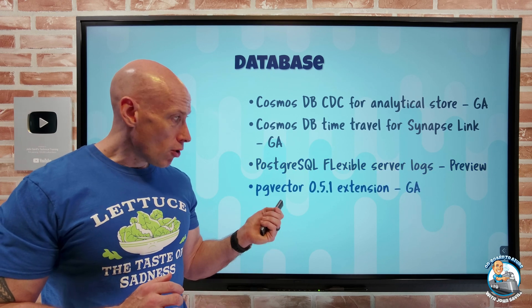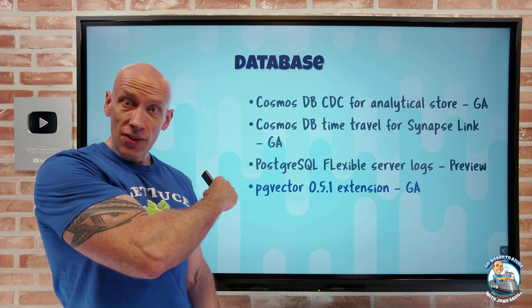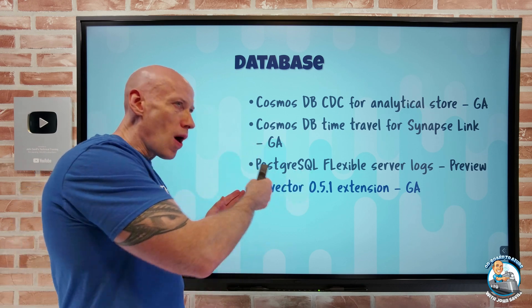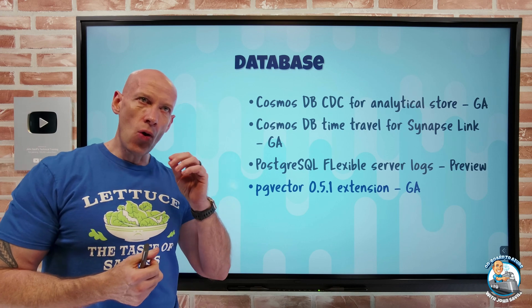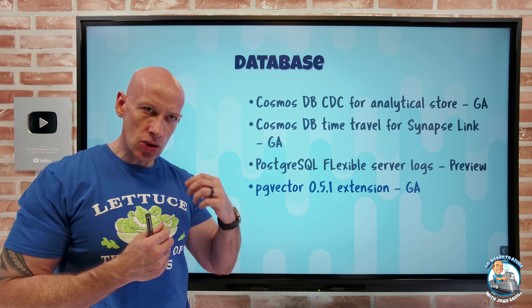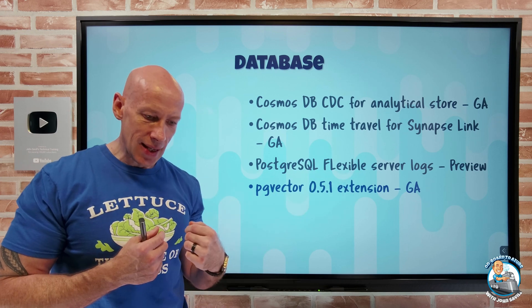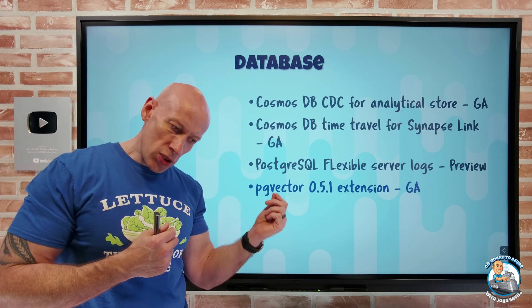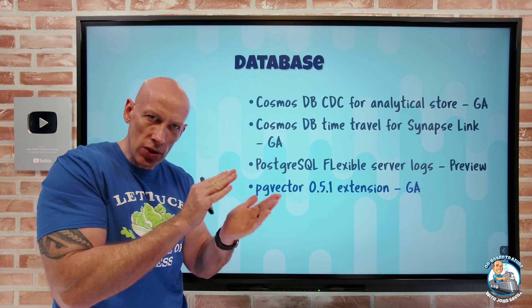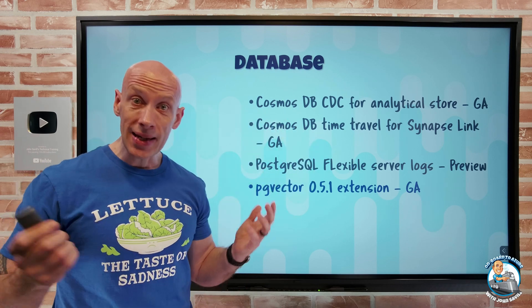The PG Vector 0.5.1 extension is now available. As discussed in this week's second video on embeddings and vectors, this enables PostgreSQL to easily integrate with Azure AI services — sending data through an embedding model to get a vector back that it can store. It also adds a new nearest-neighbor search capability to find the closest data in a very efficient and large-scale manner.